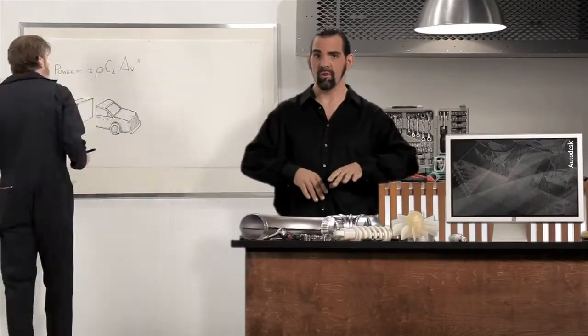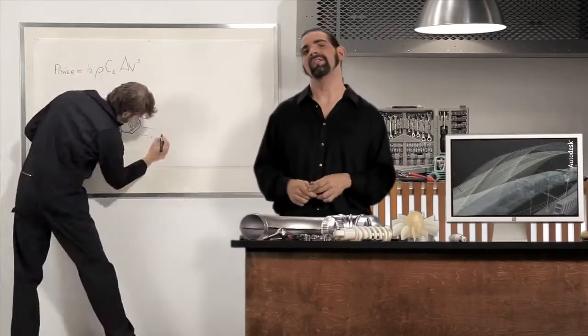The power required to move the air molecules out of the way depends on the density of the air, the car's cross-sectional area, and the cube of its velocity.